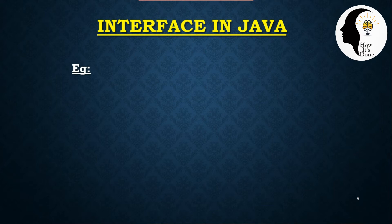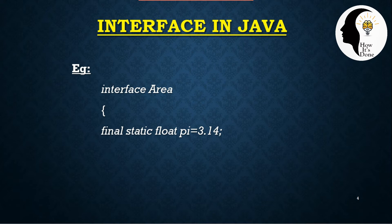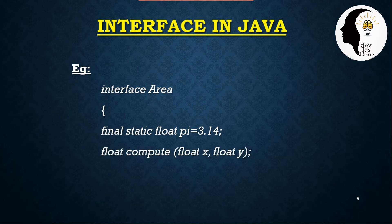Here is an example. We define an interface called Area. Inside the interface, we have a variable pi, which represents a final static value — pi equals 3.14. Then we have a method declaration with return type and method name compute, with a parameter list, and a void show method.